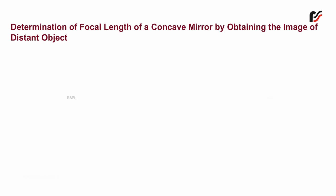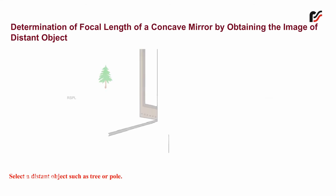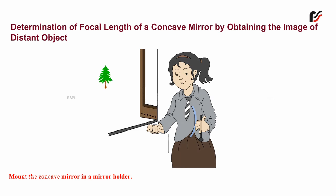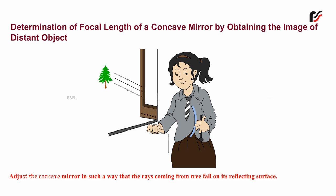Determination of focal length of a concave mirror by obtaining the image of a distant object. Select a distant object such as a tree or pole from the window of your lab. Mount the concave mirror in a mirror holder and adjust it so that the rays coming from the tree fall on its reflecting surface.